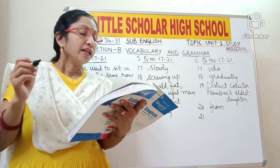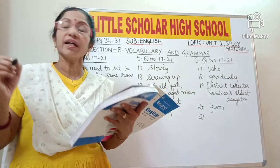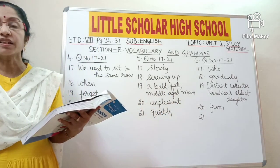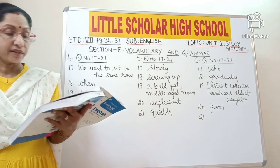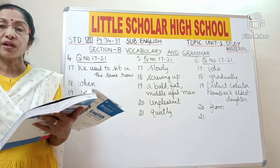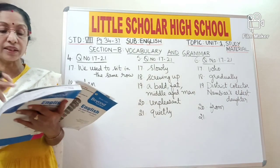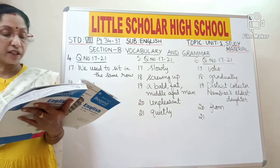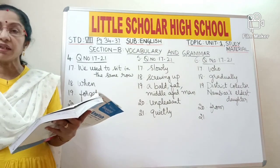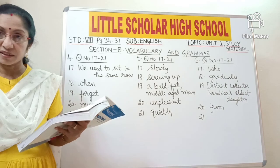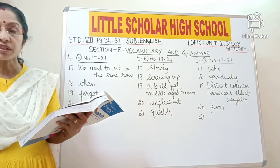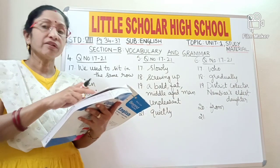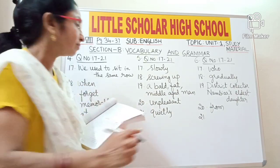Question number 21: 'He wrote everyday.' The word 'everyday' means it is a regular present action, but 'wrote' represents past tense. So 'wrote' should be replaced with the correct present tense form 'writes'. So the word 'wrote' will be replaced with 'writes'.